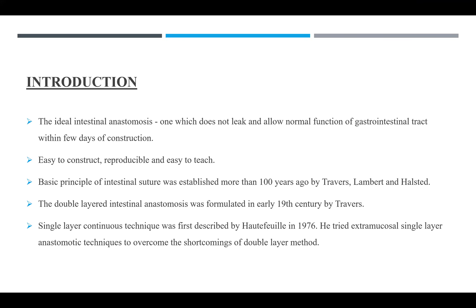The ideal intestinal anastomosis can be defined as one which does not leak and allows normal function of the gastrointestinal tract within a few days of its construction, and it should be easy to construct, reproducible, and easy to teach. The basic principle of intestinal suture was established more than 100 years ago by Travers, Lambert, and Halstead. Travers in the 19th century formulated the double-layered intestinal anastomosis, and the single-layer continuous technique was first described by Hartfield in 1976, who tried the extramucosal single-layer anastomosis technique.